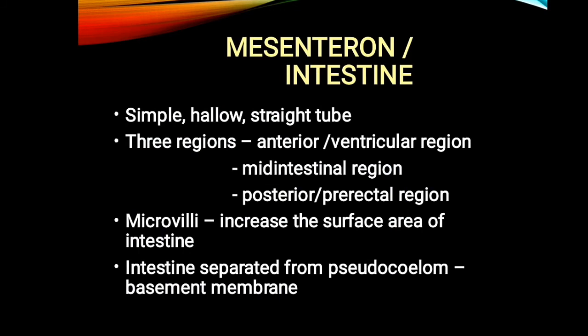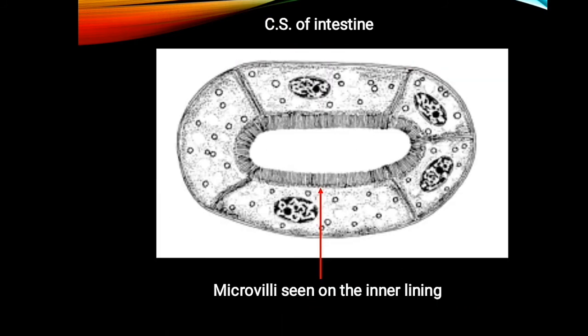Next, about the mesenterone or intestine: it is a simple hollow tube having three regions — anterior ventricular region, mid part, and posterior pre-rectal region. It has microvilli, which increase the surface area of the intestine. Separating the intestine from the pseudocoelom is a basement membrane.